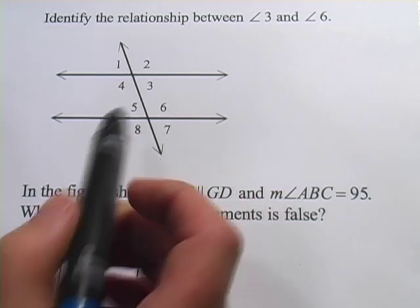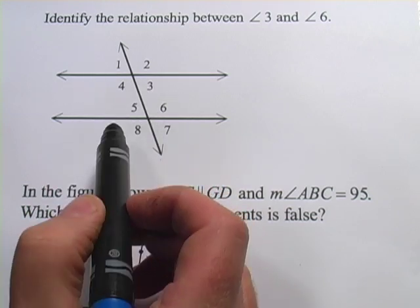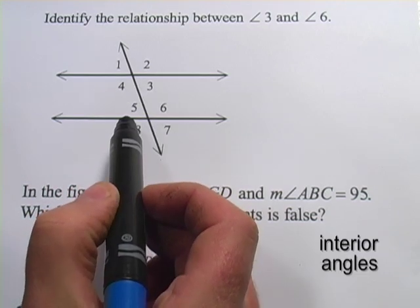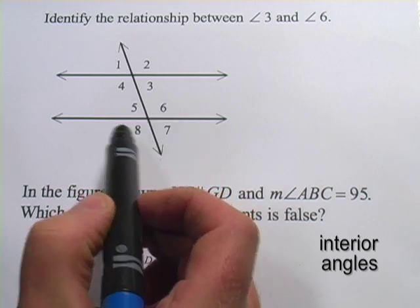First of all, there are the angles that are on the inside, so sandwiched between the two parallel lines. Those are called the interior angles, so three, four, five, and six are interior.